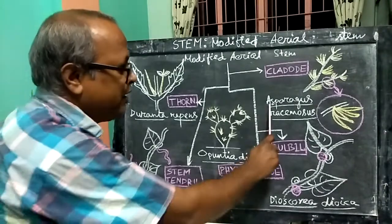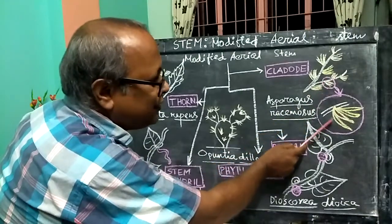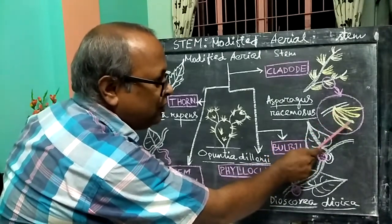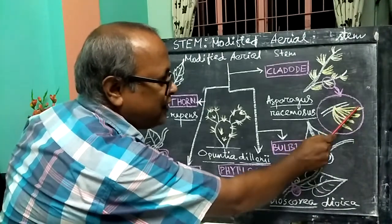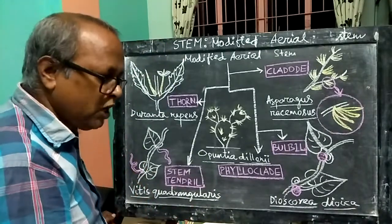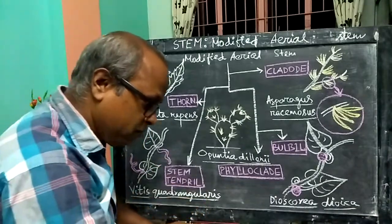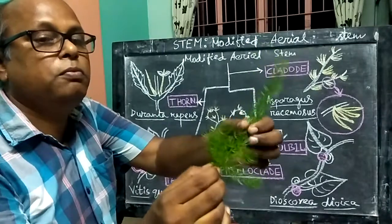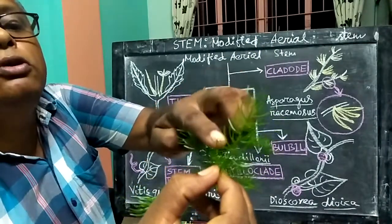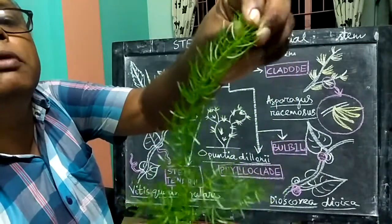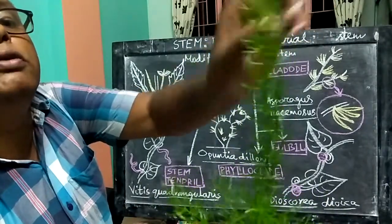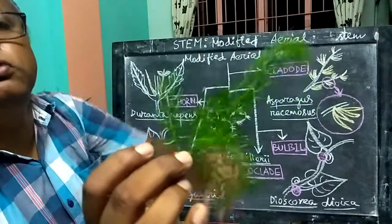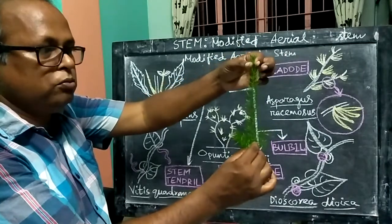The example is Asparagus racemosus. I will highlight this one — if you look at this, you can see it. Asparagus racemosus has a cladode structure. This is the cladode — it was always a cladode.